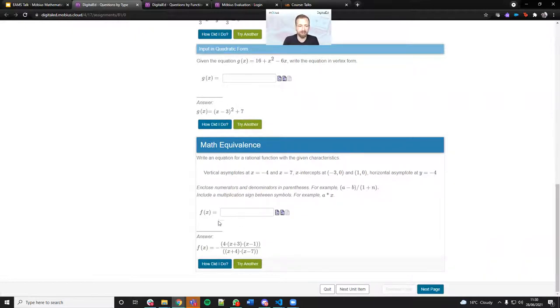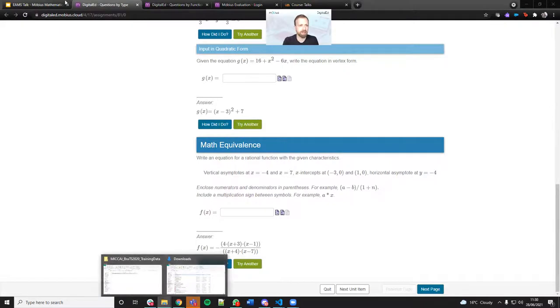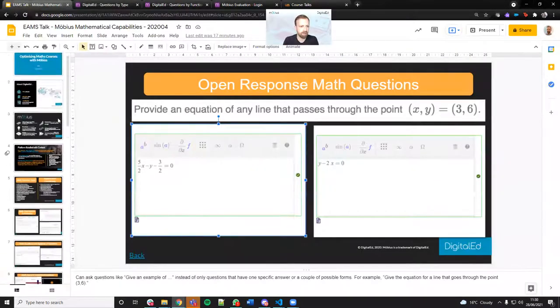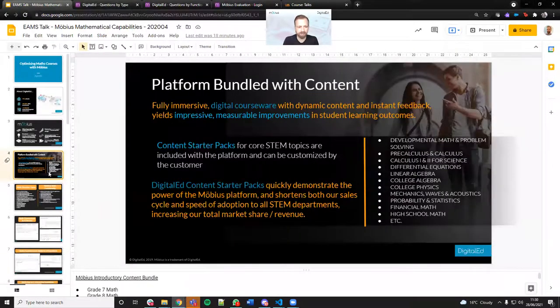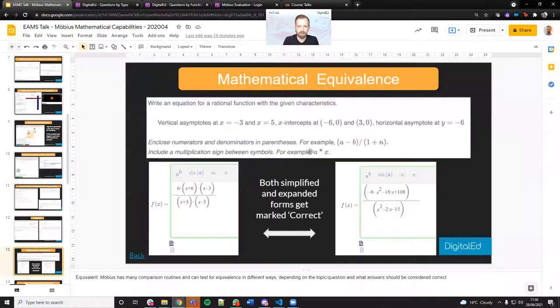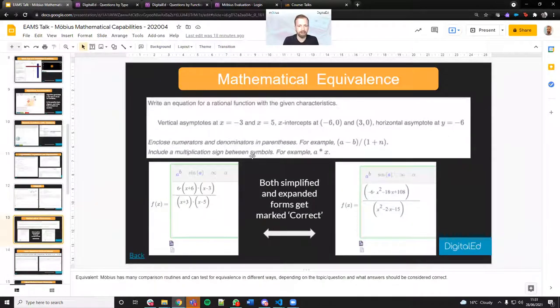Mathematical equivalence. This one is demonstrated better in the slides here. This is that question we saw earlier with different randomization. We can see that regardless of the form that we give the response in, it's still graded as correct.